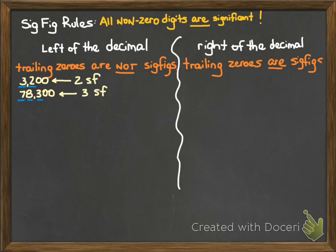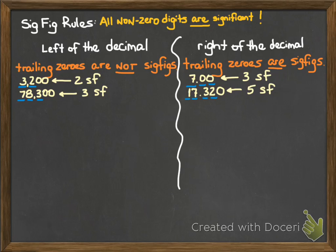When we're dealing to the right of the decimal, however, trailing zeros are significant. So take a look at this number: 7.00. That's got three sig figs. Of course the 7 is significant, but those two zeros following it are significant as well, because they're trailing zeros to the right of the decimal point. How about the number 17.320? That one's got five sig figs. Of course the non-zero digits are significant, and in this case the zero, since it's to the right of the decimal point, is also significant, giving us a total of five.